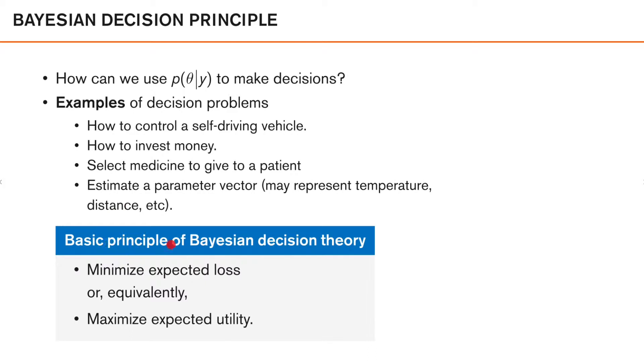So the basic principle of Bayesian decision theory is simple. It can be summarized like this: we want to minimize the expected loss, or more specifically, we want to minimize the posterior expected loss, which is how this posterior distribution comes to play. An alternative and equivalent formulation is to use what's called utility instead. So instead of minimizing expected loss, we can maximize the expected utility.